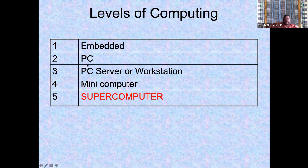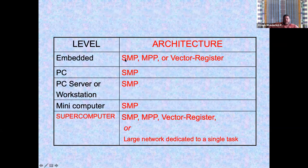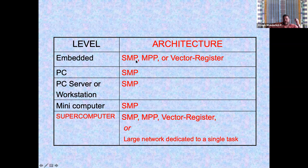The levels of computing include: embedded PCs, PC servers and workstations, minicomputers, and supercomputers. The architectures — SMP, MPP — are embedded across these levels. Embedded systems can be really simple or really complex. Even a single processor is essentially a shared memory processor; it just doesn't have multiple cores. But now everything has multiple cores, even if it can be really simple.